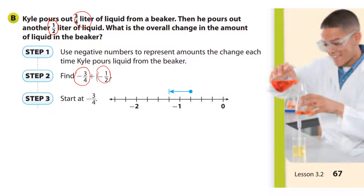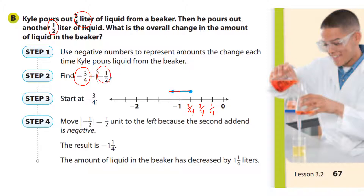On the number line: one-fourth, two-fourths (a half), three-fourths. Then we move a half — that's two-fourths — so one-fourth, two-fourths. You end up on negative one and one-fourth. That's our result.